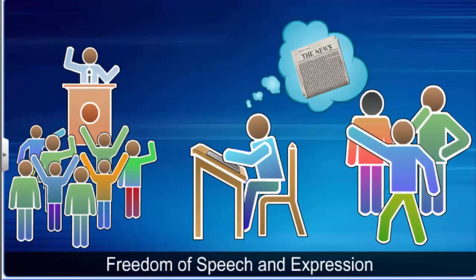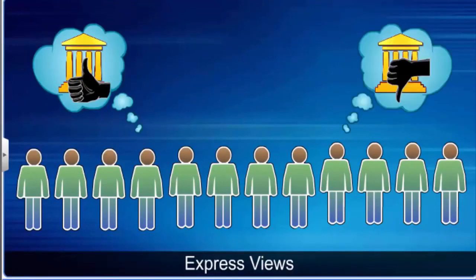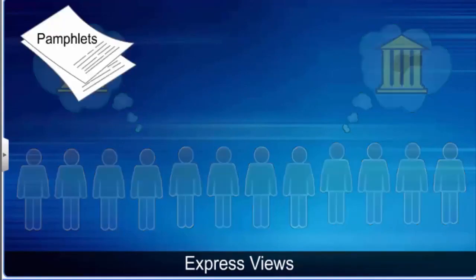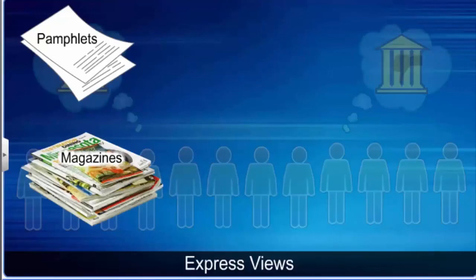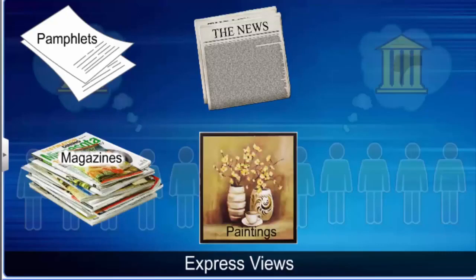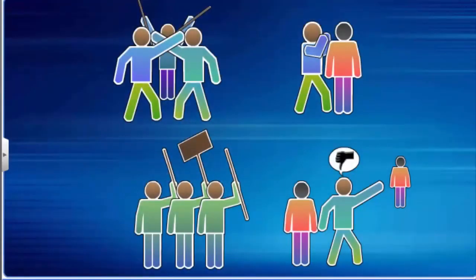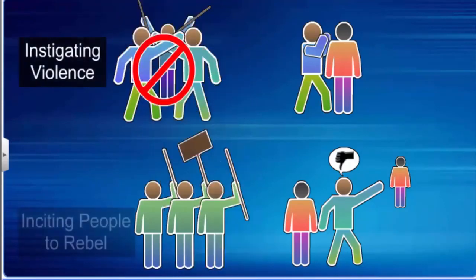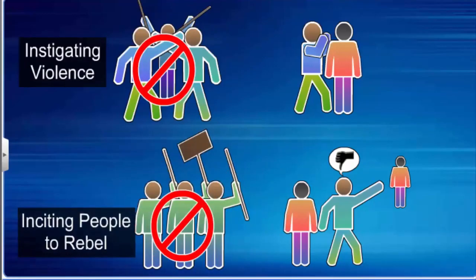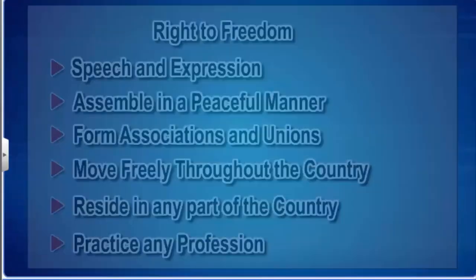The freedom of the press derives from the freedom of speech and expression. Unlike the Constitution of the United States, the Indian Constitution does not have a specific provision for the freedom of the press. Every citizen is free to express his or her views for or against the government or activities of an association through pamphlets, magazines, newspapers, paintings, poetry or songs. However, it does not give you the right to instigate violence, incite people to rebel, or defame others by spreading false rumors or causing damage to a person's reputation.